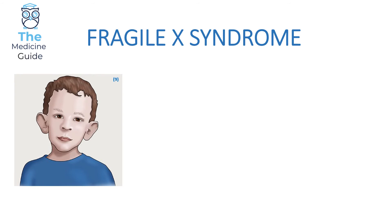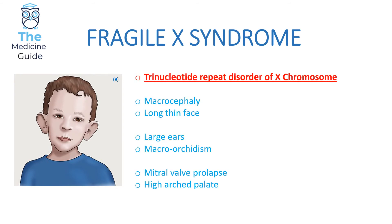Fragile X syndrome is due to a trinucleotide repeat disorder of the X chromosome — that's really important to remember for your exam. Patients tend to present with macrocephaly, a long thin face, large ears, macroorchidism (large male genitalia), mitral valve prolapse, and a high arched palate.